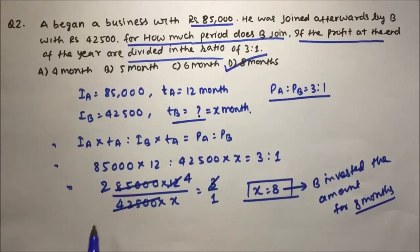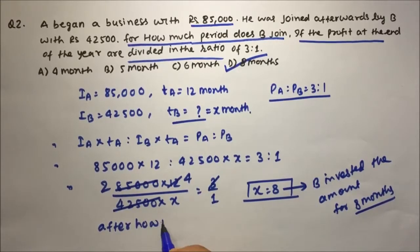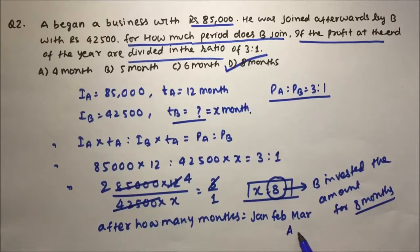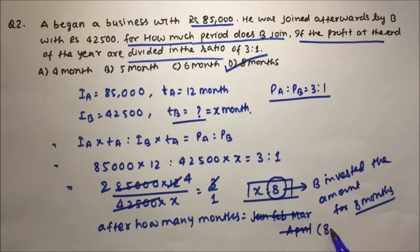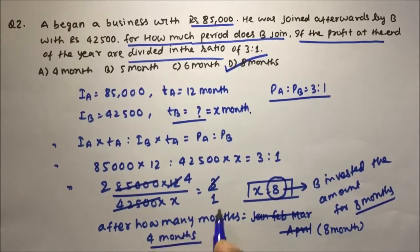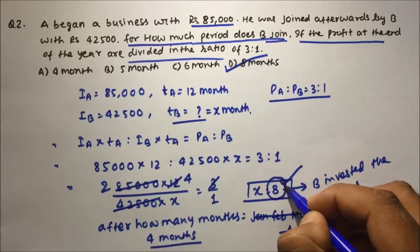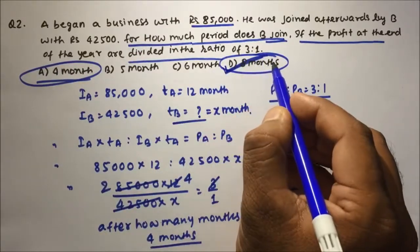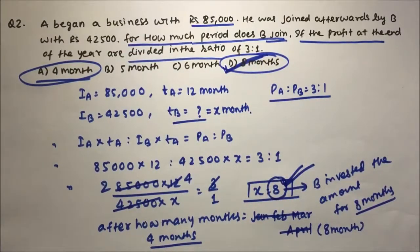In this question, two things can be asked. If they ask after how many months B joined: since B invested for 8 months, B would have joined after 4 months. If they ask for how much period B joined, then B joined for 8 months. Both options may appear in the exam, so you have to be very careful otherwise you will end up making mistakes. Thanks for watching the video.